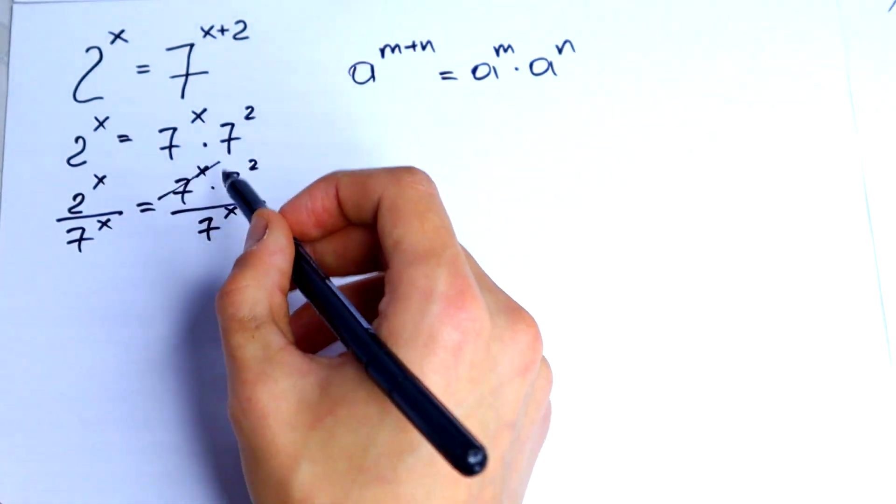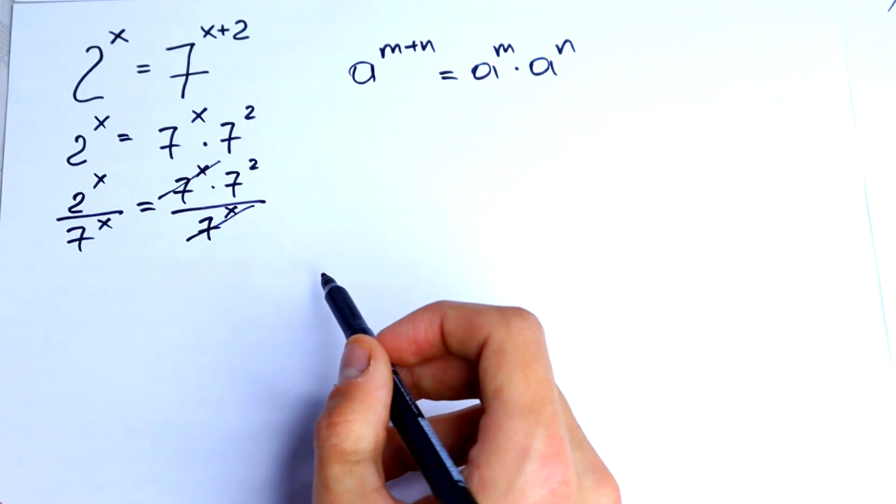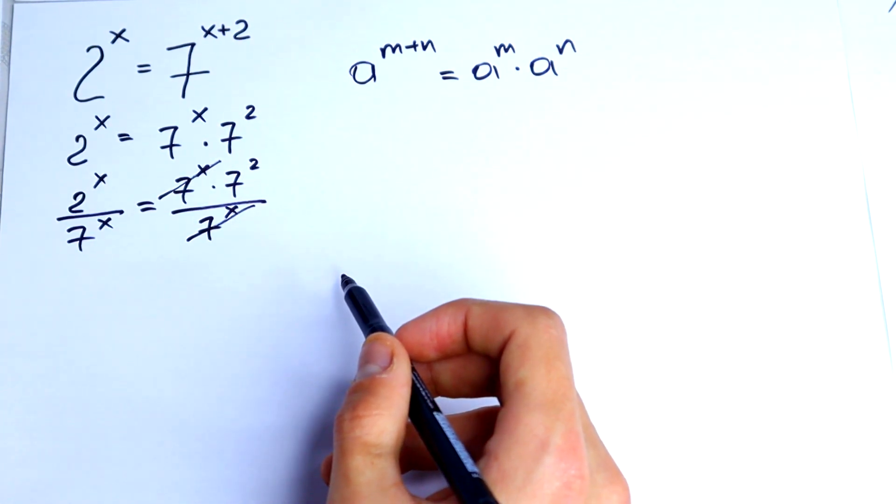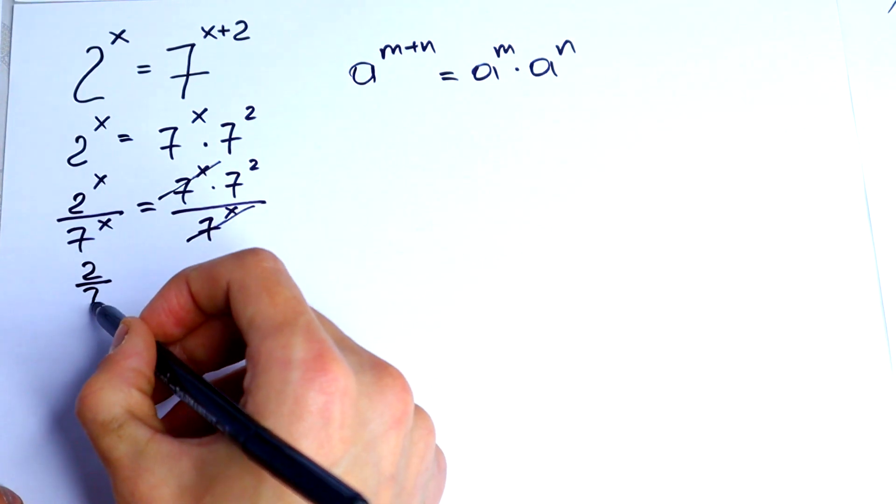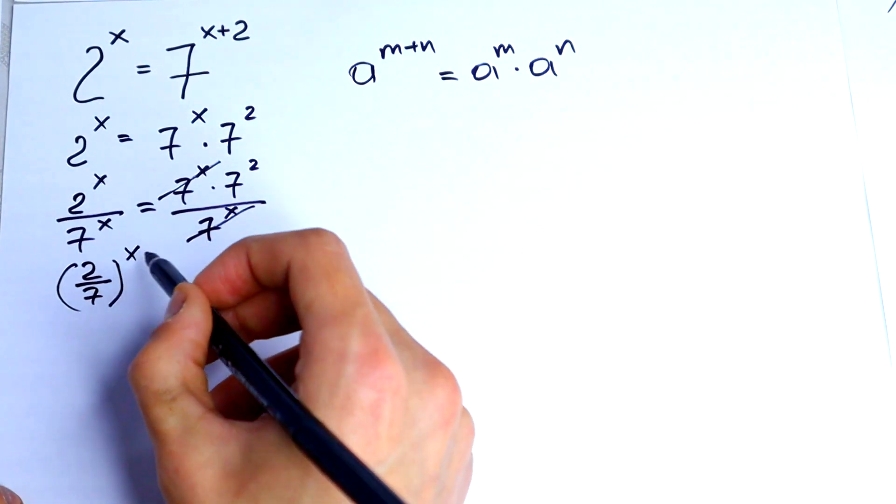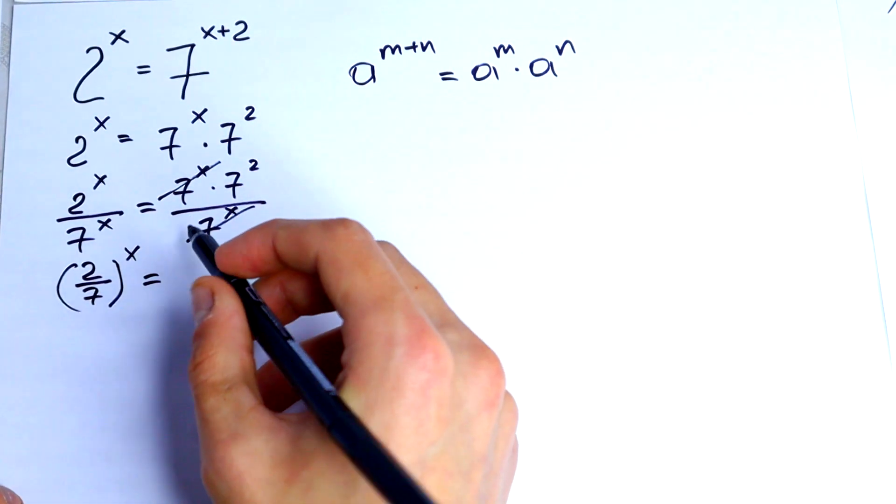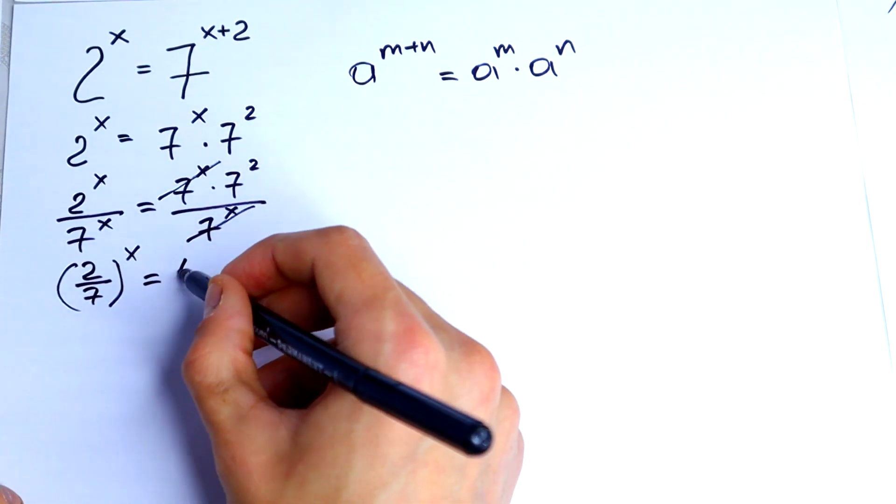7 to the power x and 7 to the power x we can cancel. And as a result we will get 2 over 7 to the power x equal to 7 square, which is 49.